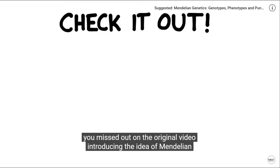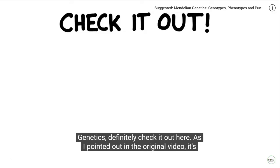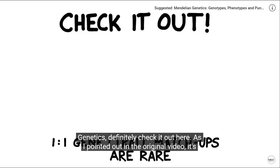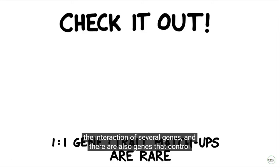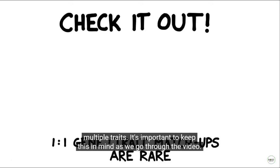If you missed out on the original video introducing the idea of Mendelian genetics, definitely check it out here. As I pointed out in that video, it's rare to have one gene to one trait matchups. Most traits are determined by the interaction of several genes, and there are also genes that control multiple traits. It's important to keep this in mind as we go through the video.